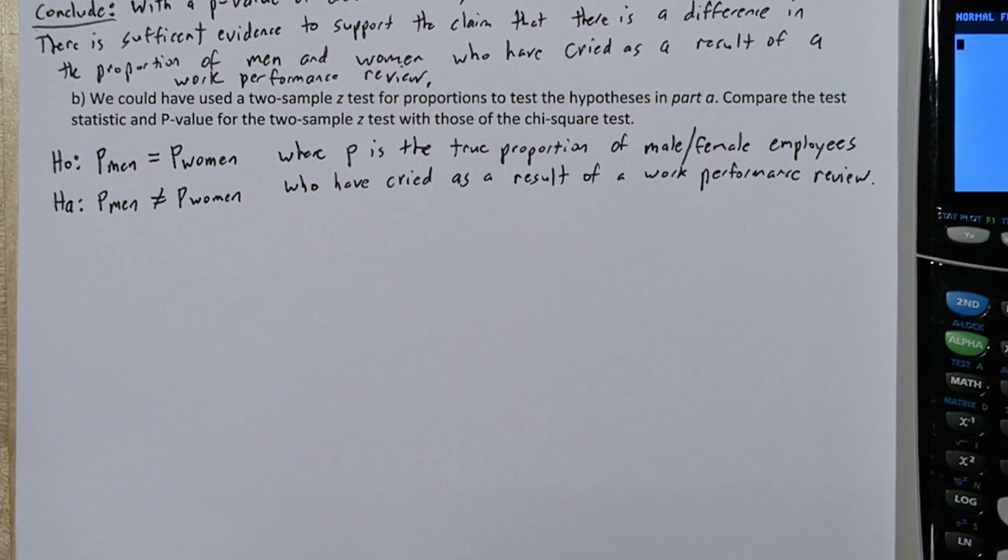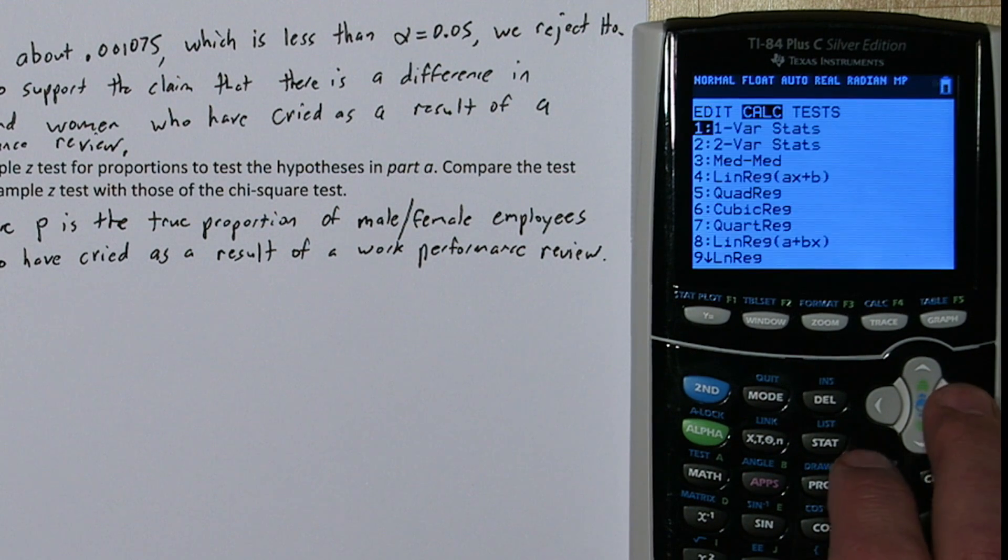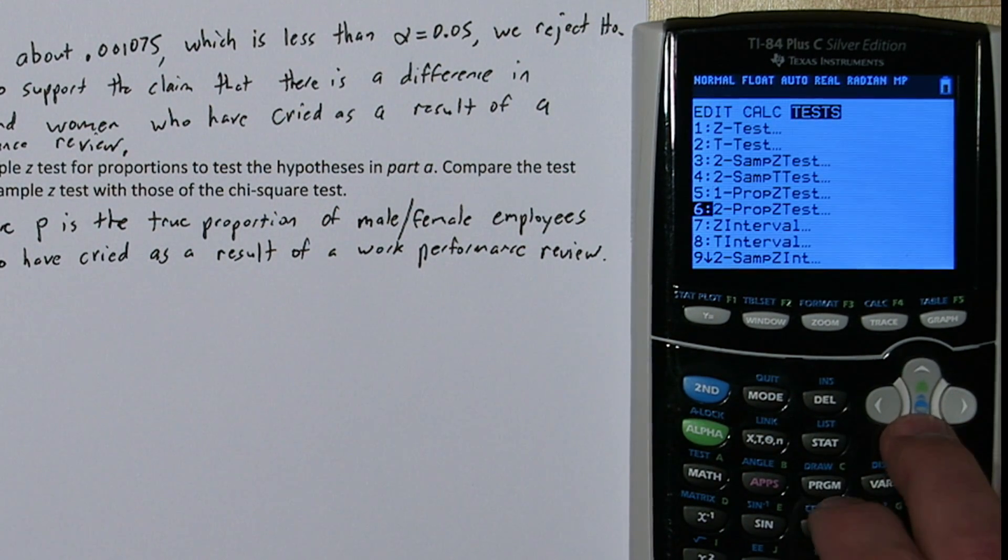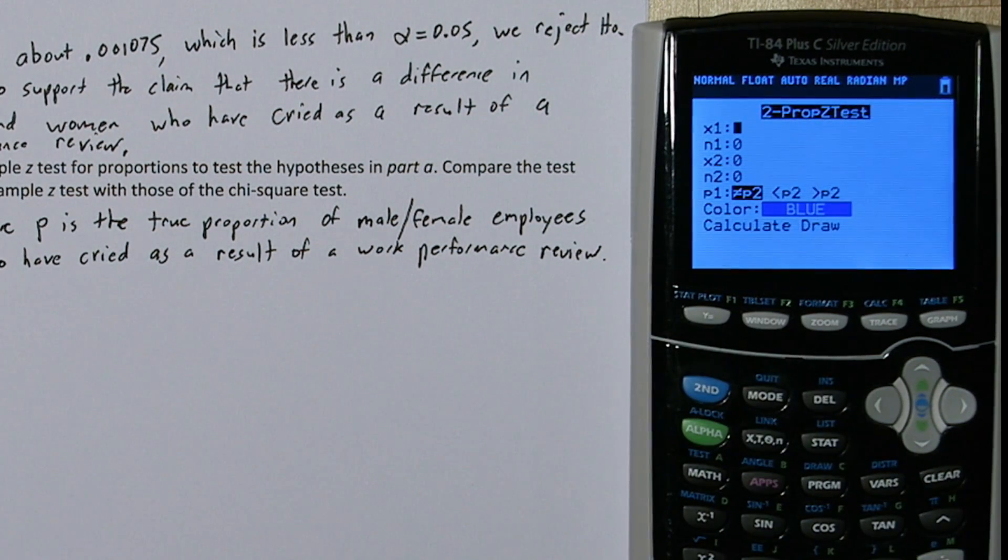So we're not going to check conditions on this problem. Let's go right to the test. If you press STAT and you go over to test, one of your options is a 2 prop z test. So x1 is how many men cried. So we'll say 187. N1 is our total sample size of men, which we know is 750 from above, but we could also do this. We could type 187, the number who cried, plus 563, the number that didn't cry. And it inputs the 750 for us.